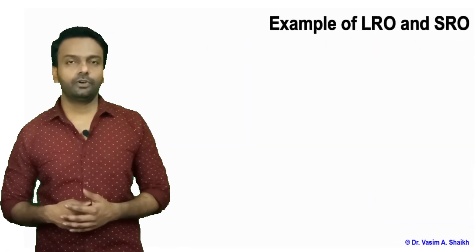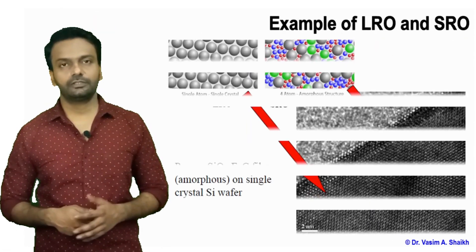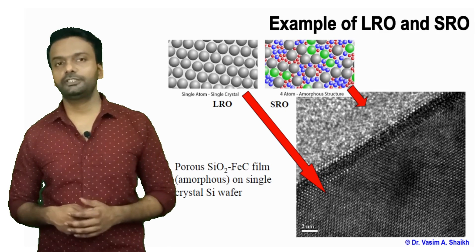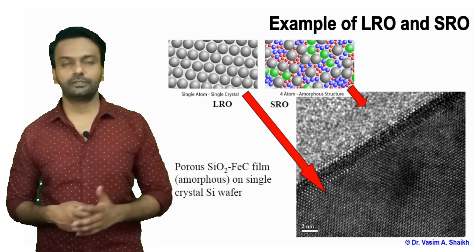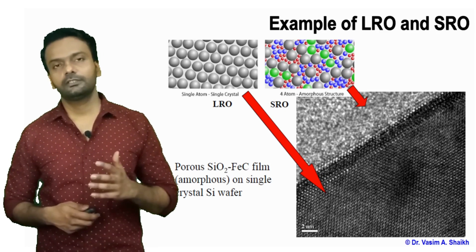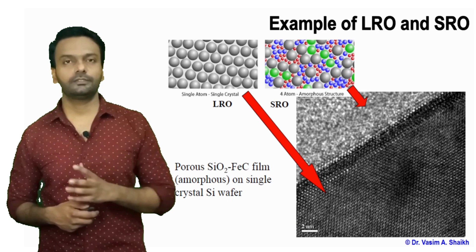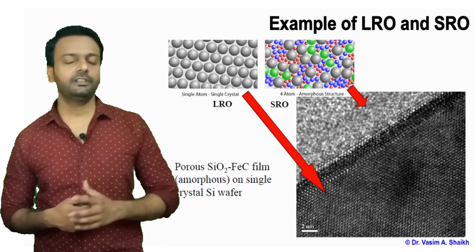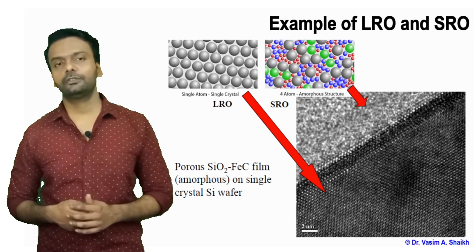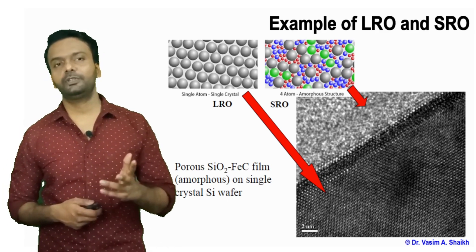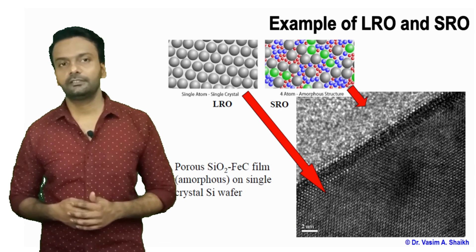Examples of long range order and short range order: long range order has repeated units, while short range order has no repeating unit. An example shown is porous silicon dioxide and an iron carbide film on a crystal silicon substrate. This film is amorphous and does not show any repeated arrangement of atoms.